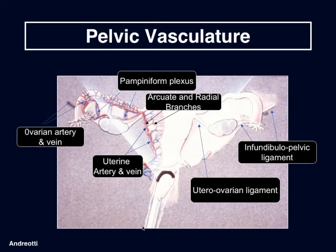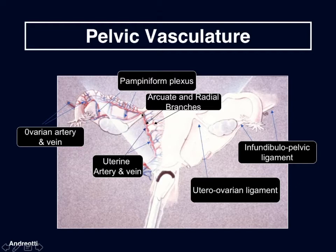Let's move on to pelvic vasculature. We're mainly talking about the uterine and ovarian arteries. The uterine artery is a branch of the anterior division of the internal iliac artery, running medially on the levator ani muscle to the cervix. The uterine artery then ascends along the lateral aspect of the uterus in the broad ligament to the level of the uterine cornu, where its ovarian branch courses laterally in the utero-ovarian ligament. The ovarian artery is a branch of the hypogastric artery, and the ovarian branch of the uterine artery can meet within the utero-ovarian ligament, providing the pampiniform plexus of vessels which perfuse the ovary.